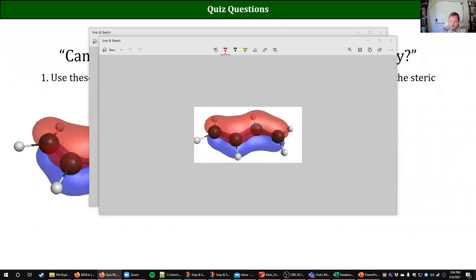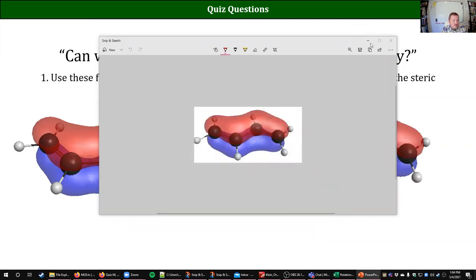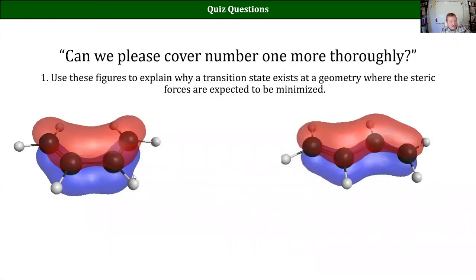What this is really showing is that we have these pi bonds in between carbons one and two, and then three and four. But when we get the most stable conformers, they wound up having their pi bonds overlapping and having resonance — we talked about this last quarter when we talked about resonance and cycloadditions.